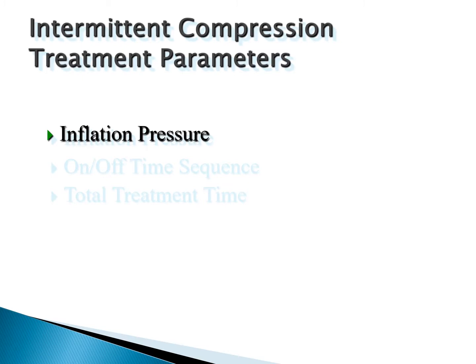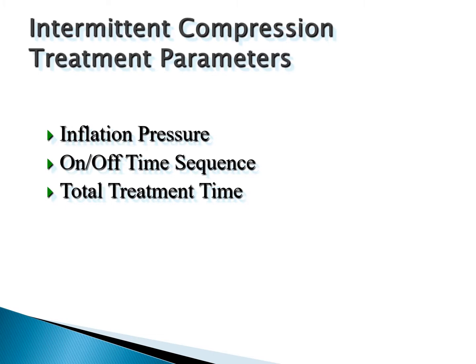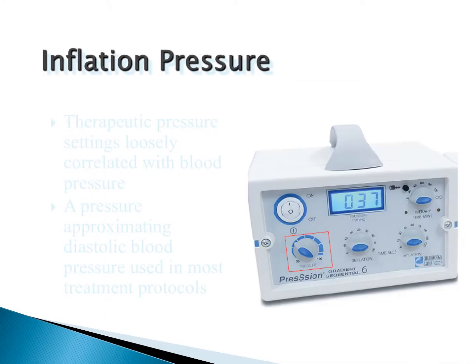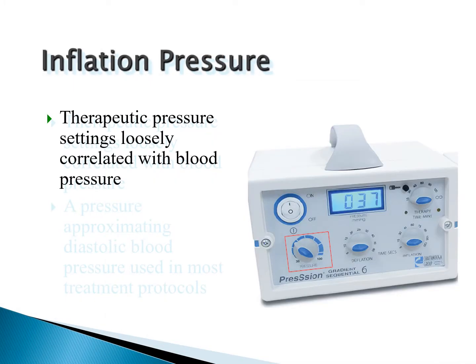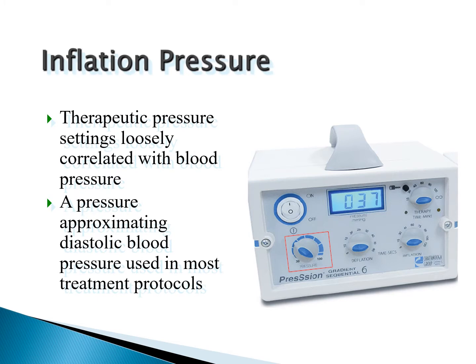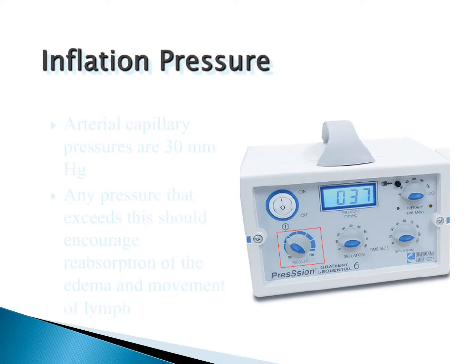For treatment parameters, inflation pressure should not exceed the patient's diastolic pressure, which we can determine by taking their blood pressure. On-off time sequencing is typically 30 seconds on and 30 seconds off, though this will vary by PT orders. In the hospital setting, patients should be on their compression devices at any time they are not up and moving.